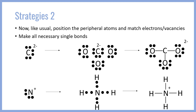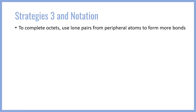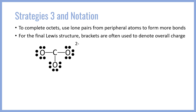We need to move on to stage three for the carbonate ion since carbon is still electron deficient. As usual, to complete the octet, we're going to use lone pairs from the peripheral atoms to form extra bonds. Those higher-order double and triple bonds come from the lone pairs of the peripheral atoms. For the final Lewis structure of a polyatomic ion, we want to use brackets to denote the overall charge. So for the CO3 2- structure, we see that carbon is electron deficient.